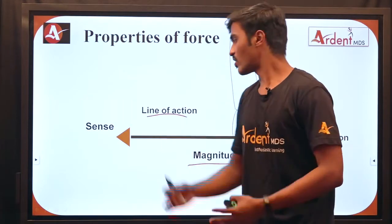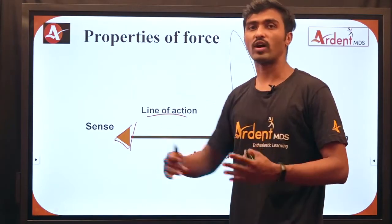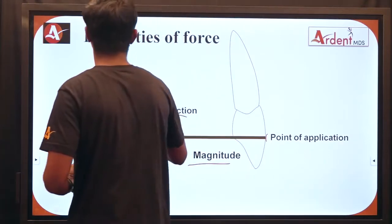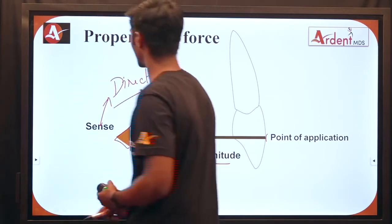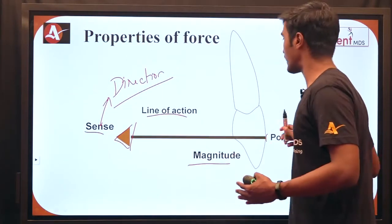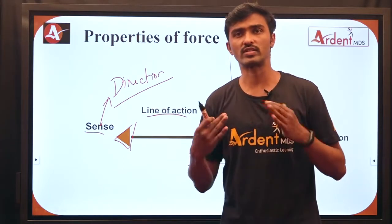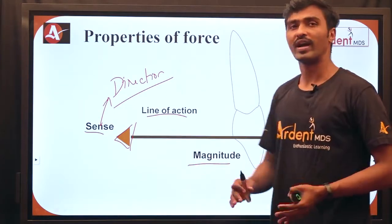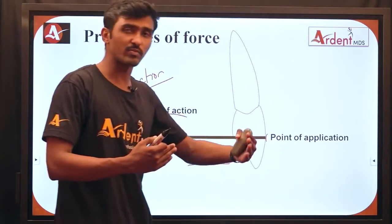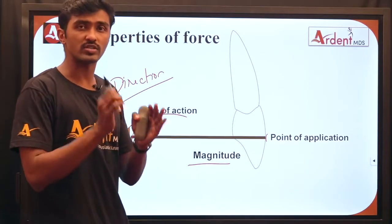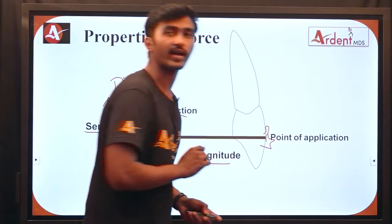From this picture, the arrowhead of the line of action denotes the direction in which the tooth is getting displaced. The magnitude refers to the quantity of force, like 10 newtons or 20 newtons. The point of application is the specific point on the tooth where the force is applied, since in orthodontics we move a tooth from one place to another by applying force at a particular point on that tooth.